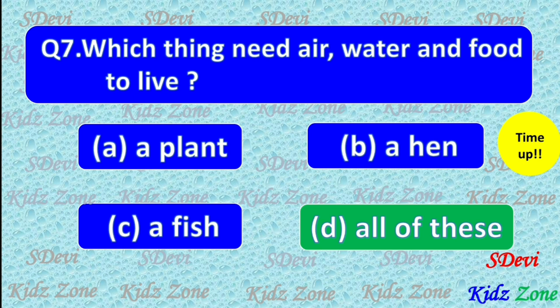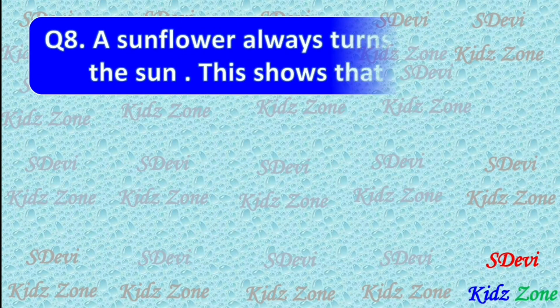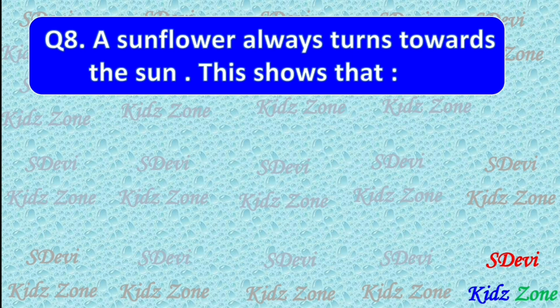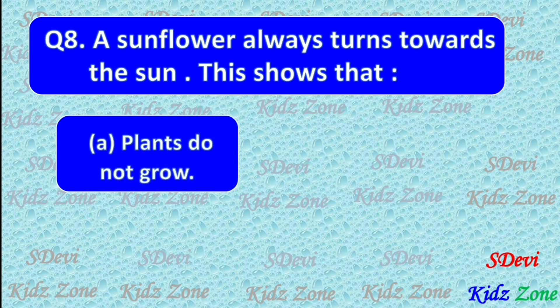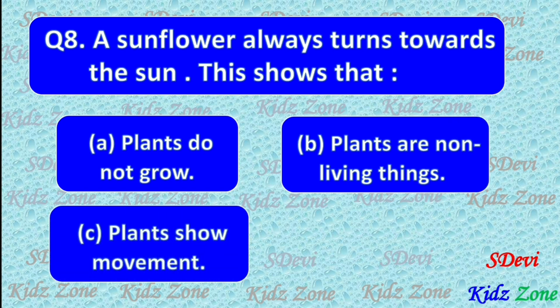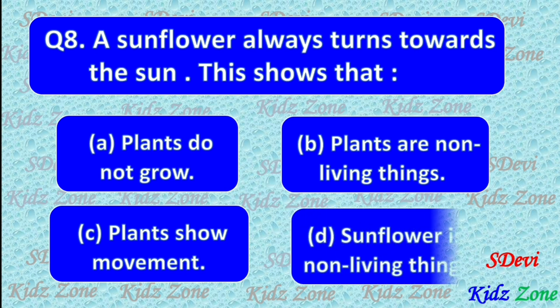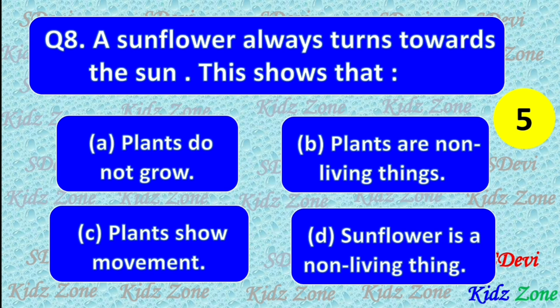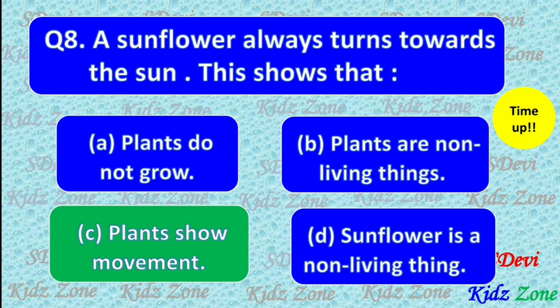Question number 8. A sunflower always turns towards the sun. This shows that: A. Plants do not grow. B. Plants are non-living things. C. Plants show movement. D. Sunflower is a non-living thing. The correct answer is C. Plants show movement.